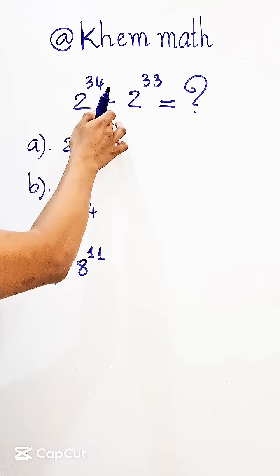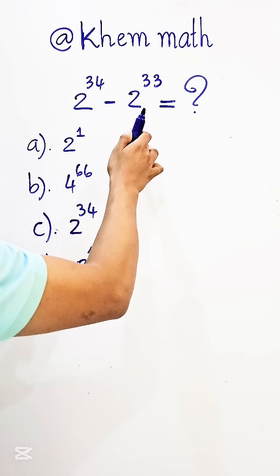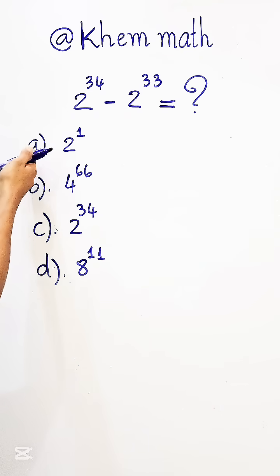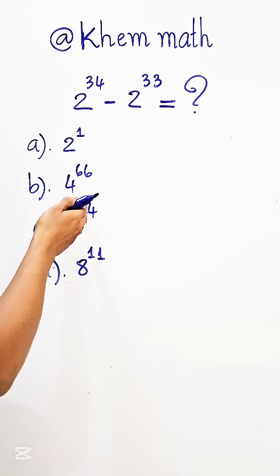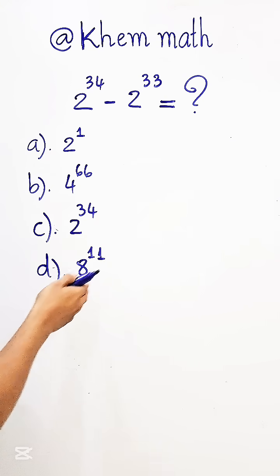2 to the power 34 minus 2 to the power 33 equals: a) 2 to the power 1, b) 4 to the power 66, c) 2 to the power 34, and d) 8 to the power 11. Which one is our answer?